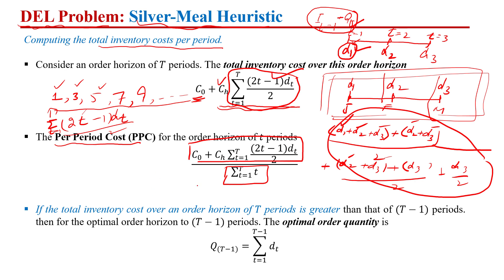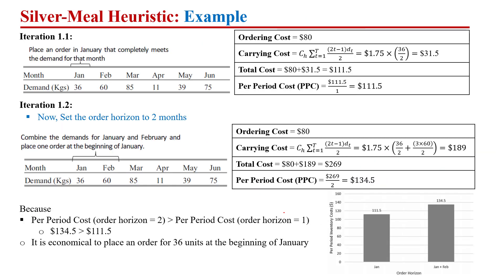The next question is how much we are going to order. That depends on comparing the total inventory cost for planning horizon T versus planning horizon T minus one. We keep extending the horizon as long as the per period cost is decreasing.